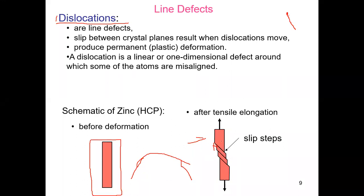This is a line defect between crystal planes. It has also a dislocation move and it produces a permanent deformation. Dislocation is a linear or one-dimensional defect around which some of the atoms are misaligned.